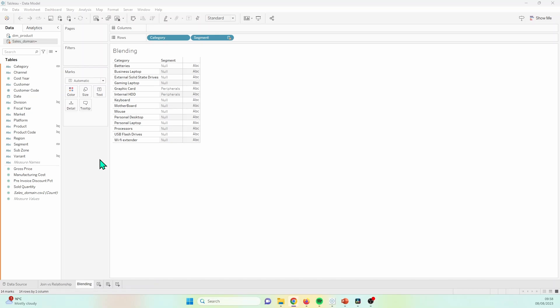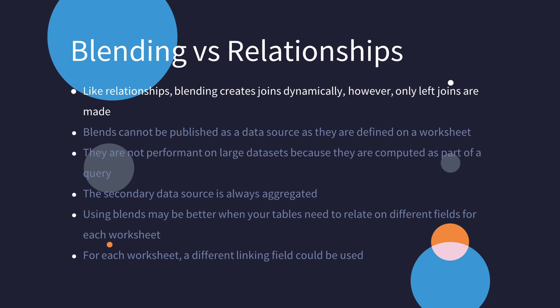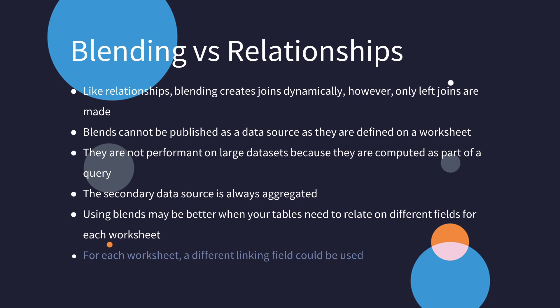Now let's look at some differences between blending and relationships. With blending, the connection between your tables can be dynamic for each worksheet, which brings some similarities to how relationships operate dynamically. However, with blending you can only create left joins. Another downside of blends is that you cannot publish the blended data as a data source as it is different for each worksheet. Blending also isn't performant on large datasets as the connection is computed as part of the queries. The secondary data source in blending will always be the one aggregated due to the nature of the left join. Blending is the only way of connecting data that allows you to change how the tables are linked for each worksheet — you can have multiple worksheets with the same two data sources connected in different ways.